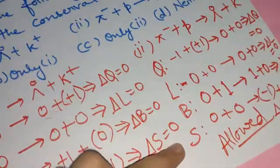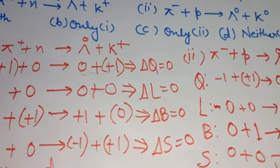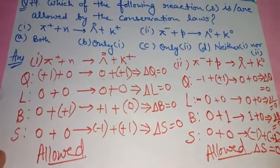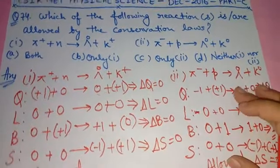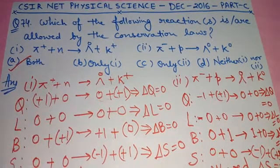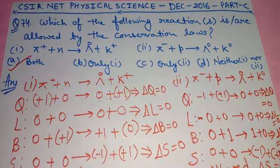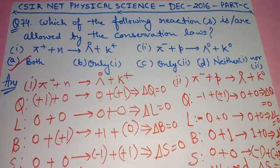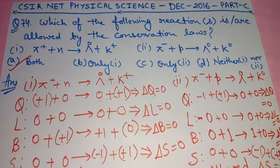So you can see that by checking mainly 4 properties — whether they are conserved or not for a given reaction — you can tell whether the reaction is allowed or not. Our answer is that both reactions are allowed under the conservation laws. This video should be enough to solve such questions. You should focus on the table: which particles are strange, which are baryons, which are leptons — with that help you can easily solve these types of questions.